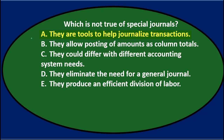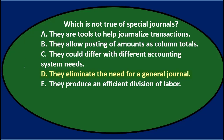A. They are tools to help journalize transactions. B. They allow posting of amounts as column totals. C. They could differ with different accounting system needs. D. They eliminate the need for a general journal. E. They produce an efficient division of labor.